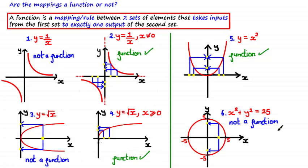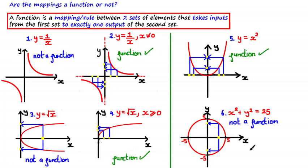In all these examples we've seen different types of mappings, some of which are functions and some of which are not. This is why we say that all functions are mappings, but not all mappings are functions.